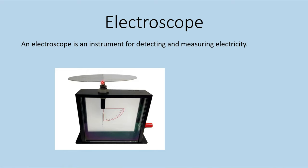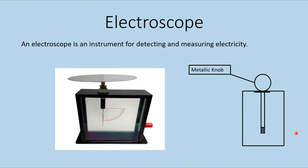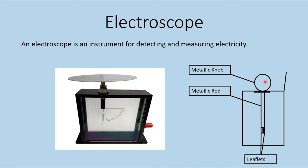We have this plate called the knob, the metallic rod — they are both conductors. They are insulated using an insulator from the container, the black frame. We have two leaflets. In a diagram of the electroscope, we have the knob, the rod, and the leaflets — all conductors — with an insulator separating this system from the container.